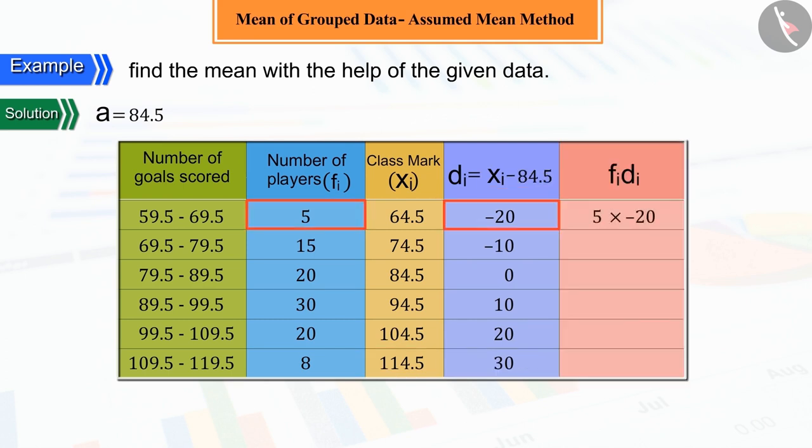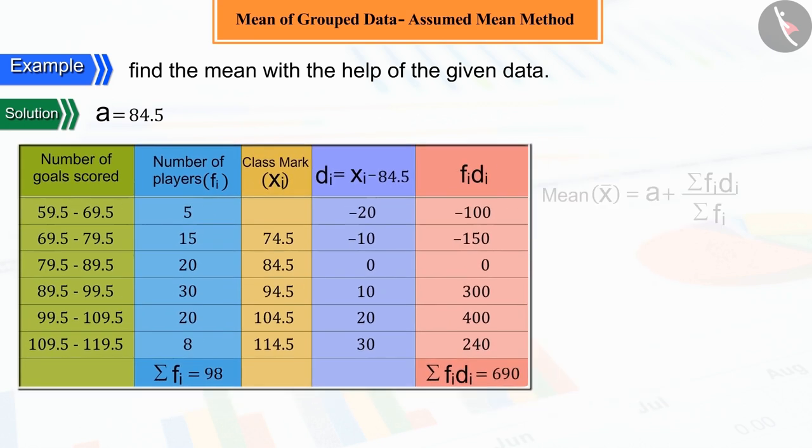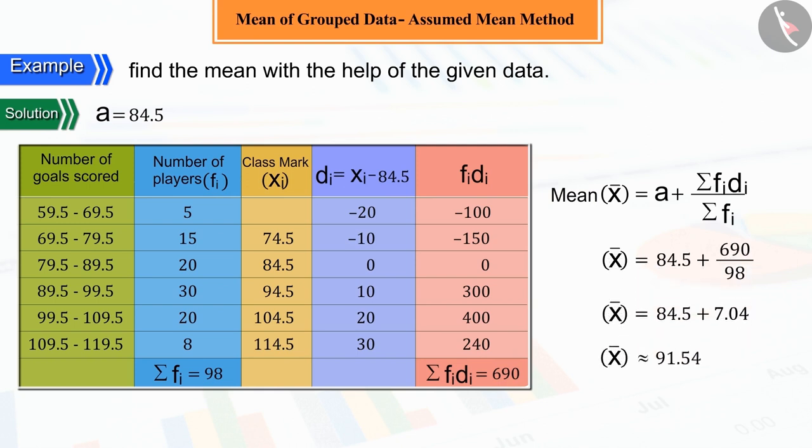And find the value of fi di. On putting the values of assumed mean A, summation fi di, and summation fi in the formula of assumed mean method, and solving, the value of mean, that is x̄, is obtained as 91.54.